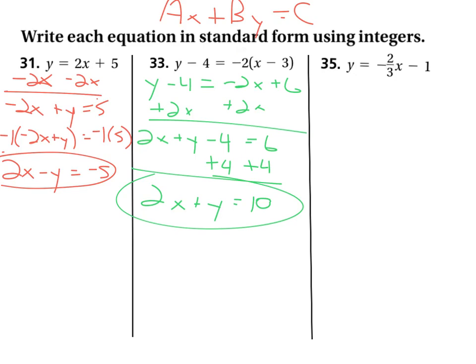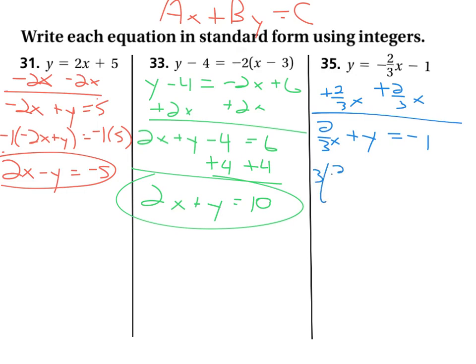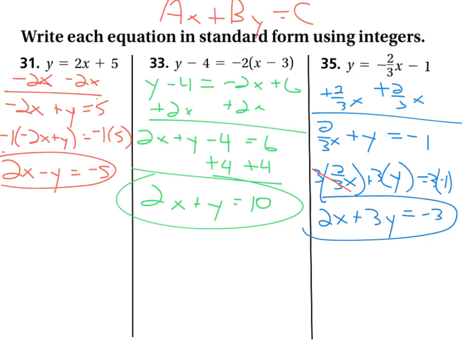For the final problem, we first move the x terms to the other side by adding 2x to both sides, giving us 2x plus y equals negative 1. Now we need to clear the fraction — the denominator is 3, so we multiply everything by 3: 3 times 2/3 x plus 3 times y equals 3 times negative 1. Those cancel out, giving us 2x plus 3y equals negative 3.